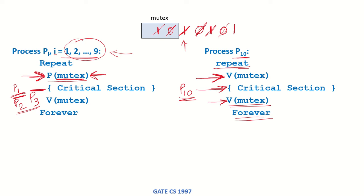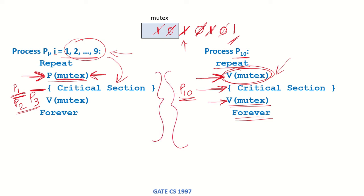Because p10 is continuously executing in an infinite loop, every time it enters the critical section it performs V(mutex), changing mutex to 1 and allowing one of the sleeping or blocked processes to also enter. In this way, at any given time all 10 processes can be present in the critical section. Therefore, the maximum number of processes that can be in the critical section with this kind of code is 10.